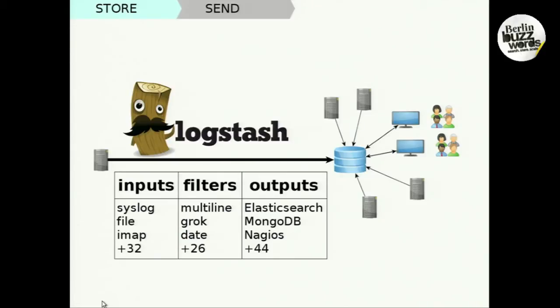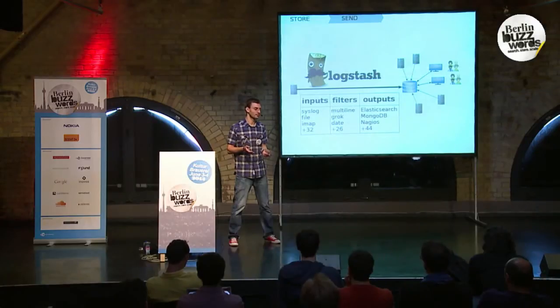You also have lots of outputs — there are like 35 inputs, and one of them is obviously Elasticsearch. You can also send data to different data stores. A lot of people use Redis for buffering. So you have your server that's logging, use Logstash with the Redis output to send your logs to Redis, and then on the other side you have another Logstash that gets your logs from Redis and puts them to Elasticsearch. So you have a buffer in the middle just in case your Elasticsearch cluster goes down — your logs get buffered in Redis and sent to Elasticsearch whenever that becomes available.